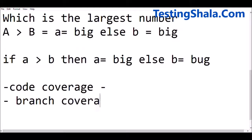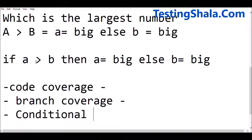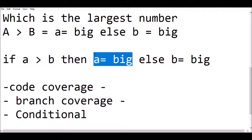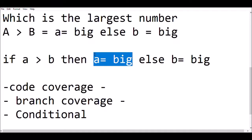We also have branch coverage. As in the example: if A is greater than B then A is big, else B is big — a branch is happening with the if-then-else. Testing those branches is called branch coverage. Then there is condition coverage, where a condition like 'if A equals B' causes the code to take a different path altogether — that is conditional coverage.